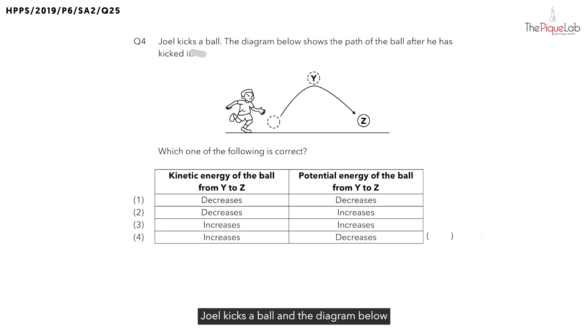Question 4. Joel kicks a ball, and the diagram below shows the path of the ball after he has kicked it. We're supposed to look for the correct changes to the kinetic energy and the potential energy of the ball from position Y to Z.